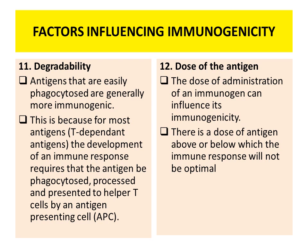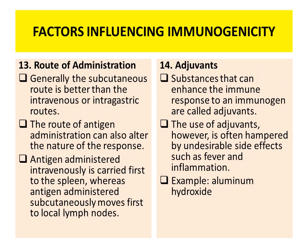Next point is the dose of the antigen. The dose of administration of the immunogen also influences immunogenicity. There is a dose of antigen above or below which the immune response will not be optimal. Then is the route of administration. Generally, the subcutaneous route is better than the intravenous and intragastric routes. The route of administration can also alter the nature of the response — antigen administered intravenously is carried first to the spleen, whereas antigen administered subcutaneously moves first to the local lymph nodes.